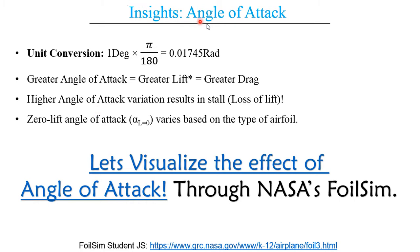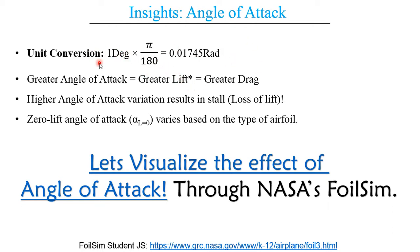Now gaining some insights about angle of attack — one particular point to be noted is the unit conversion. We will be using degrees, but in some instances you would be required to use radians. One degree multiplied by pi over 180 gives you the radian value. Similarly, if you have the radian value and multiply it by 180 over pi, you will obtain the value in degrees.